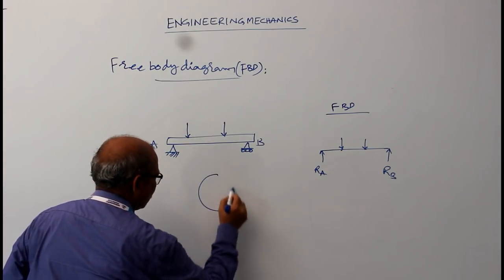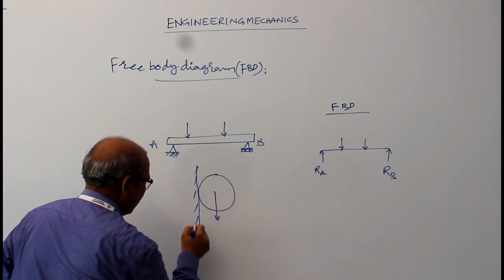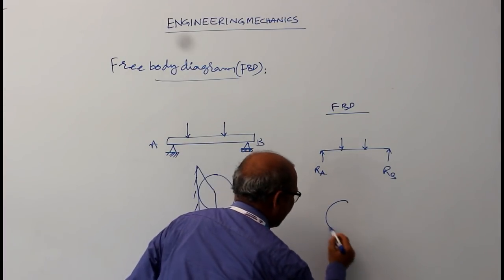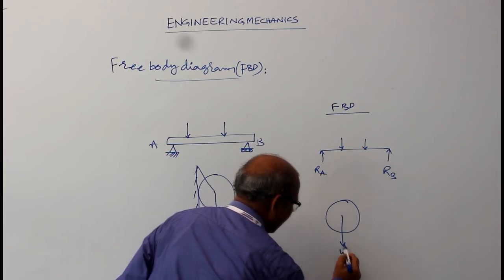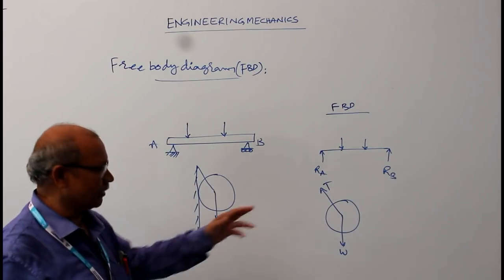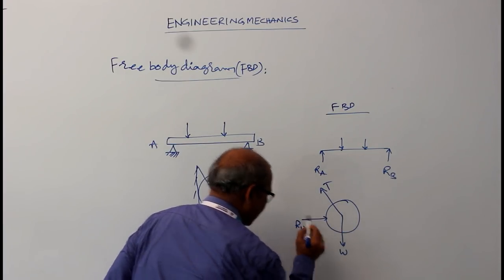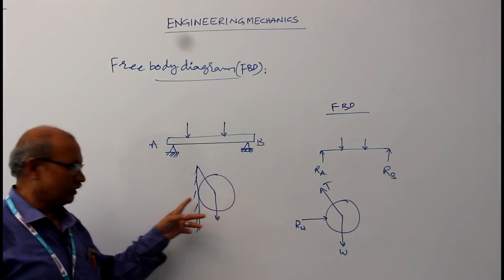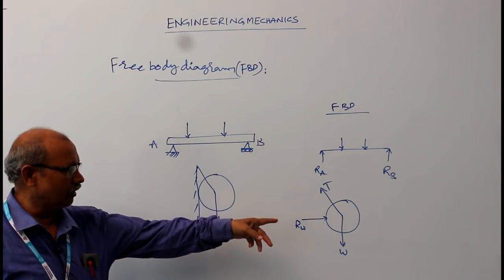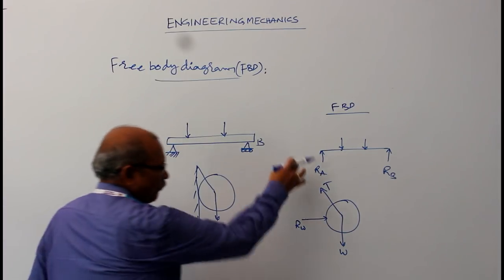Likewise, suppose a sphere is hanging from a wall with the help of a wire which is connected to its center. Then its free body diagram is like this — this is the weight of the object, and this is the force, which we treat as a tension in the string, and this is the reaction of the wall. Here, the sphere is pushing the wall, and hence the wall applies a force on the sphere. So these are the different kinds of forces that are acting on the object.